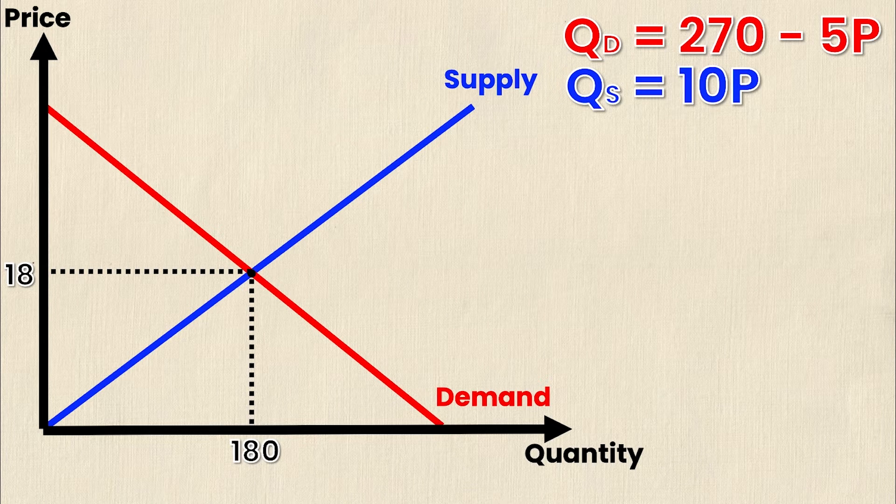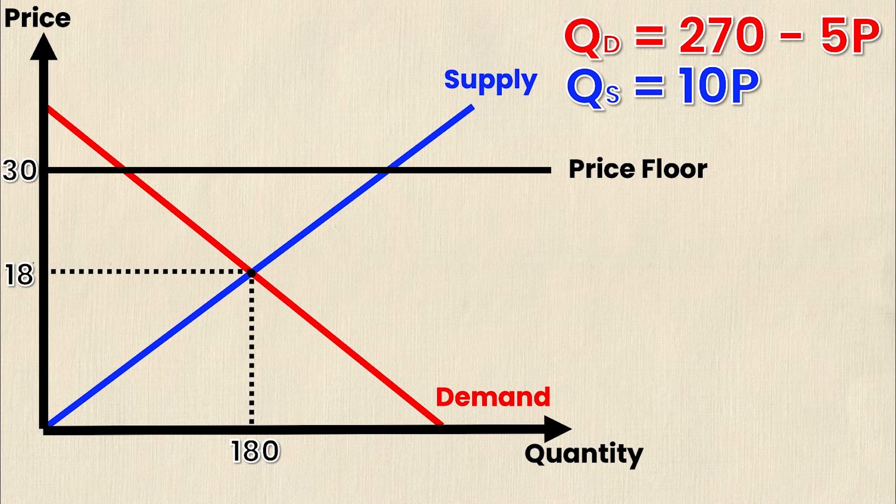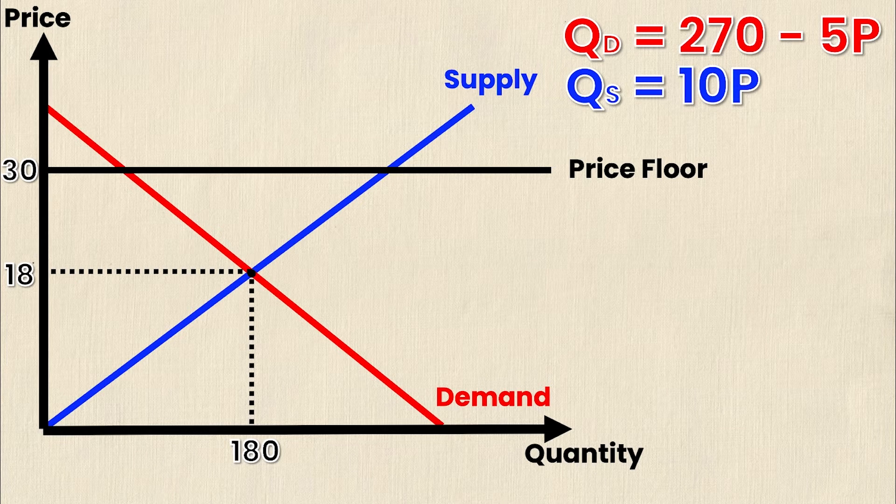If the government employs a price floor then they're going to set the minimum price, in this case equal to 30, which is strictly higher than the equilibrium price. When the government does this they're creating a surplus in the market because now you can see that quantity supplied is strictly greater than quantity demanded at a price of 30, and that makes sense because of the law of supply and the law of demand.